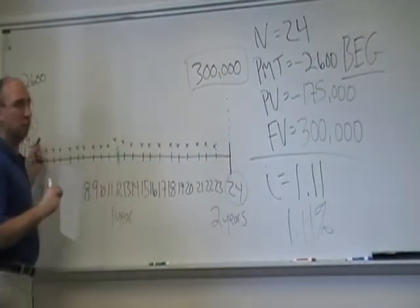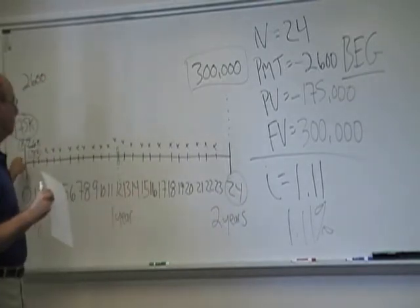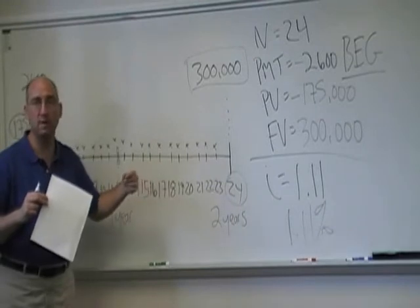So the $175,000 will grow for 24 months at 1.11 percent per month. The first $2,600 will also grow by 1.11 percent per month for 24 periods.